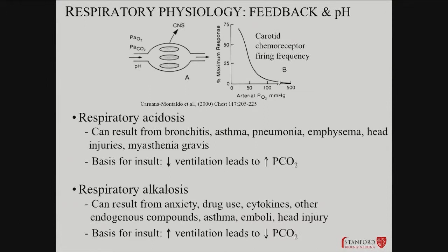With pneumonia you've got infiltrates and inflammation. Emphysema is a complex histological process — the main issue is that due to chronic smoking or chronic exposures, you have breakdown of the structural integrity of the lung, including the alveoli and the elastin fibers that help regulate its elasticity. The lung can't expand fully — it actually looks a little bit like asthma in some ways, even though the bronchi themselves are not constricted. Because the lung is not elastic, it can't inflate as fully.